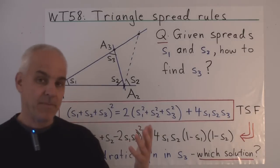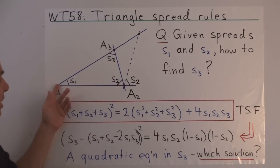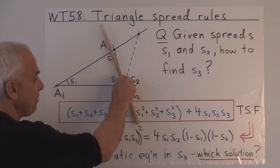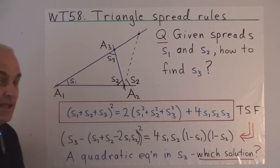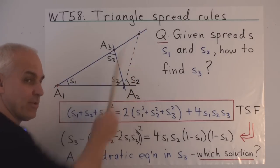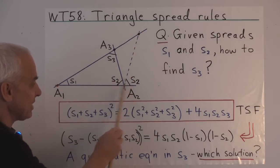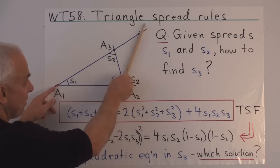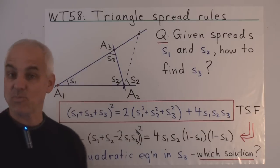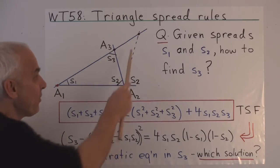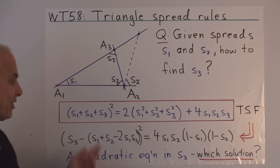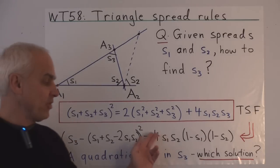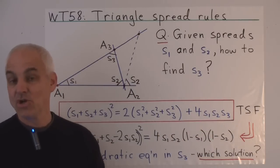Geometrically, the two different solutions correspond to two possible alternate configurations. Since the spread is only between two lines, there's an alternate triangle with sides that have the same basic spreads S1 and S2 at the base, and the spread at the top would be the other solution to this quadratic equation. So in practice, what we want to know is which of the two solutions should we choose.